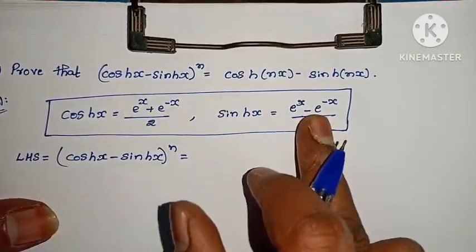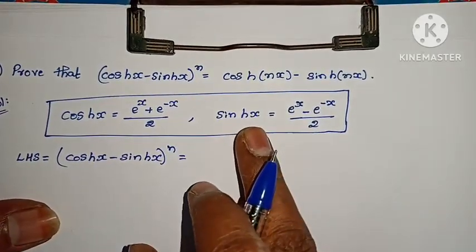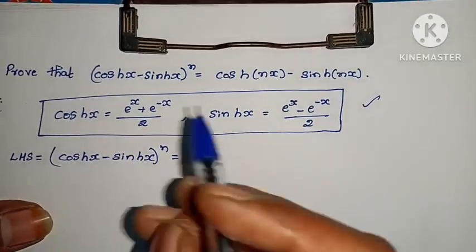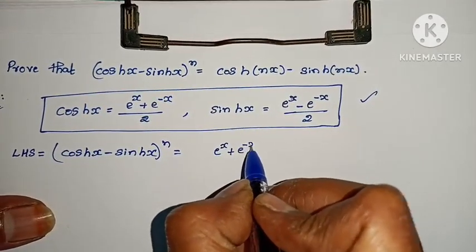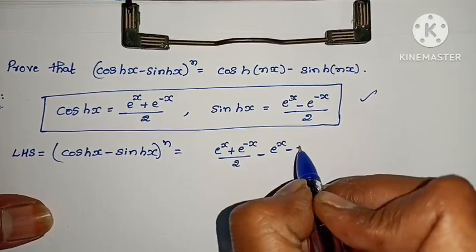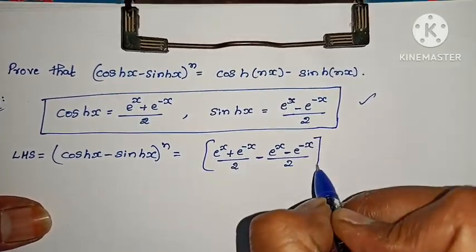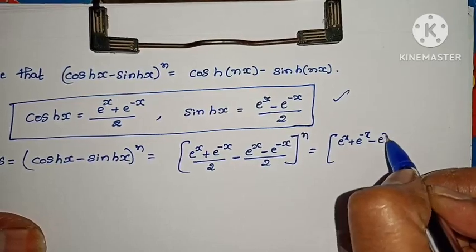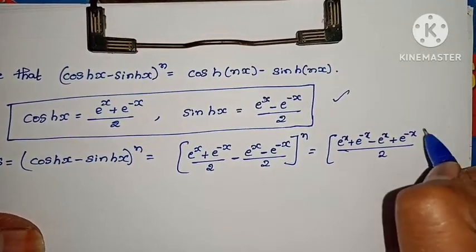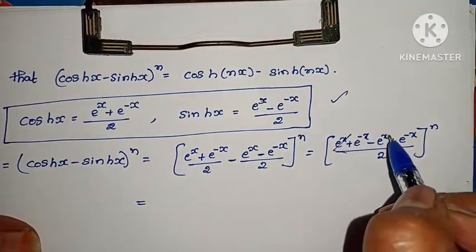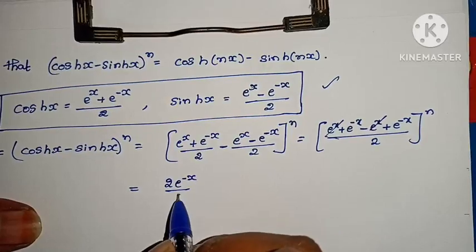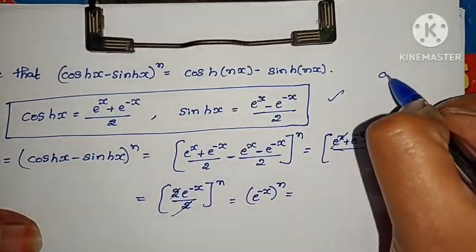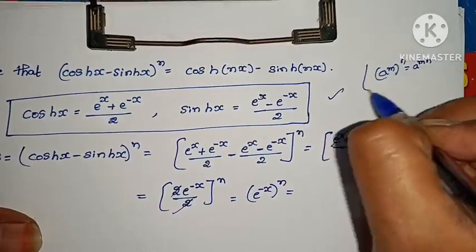LHS = (cosh(x) − sinh(x))ⁿ. Using the exponential definitions: cosh(x) = (eˣ + e⁻ˣ)/2 and sinh(x) = (eˣ − e⁻ˣ)/2. So cosh(x) − sinh(x) = (eˣ + e⁻ˣ)/2 − (eˣ − e⁻ˣ)/2. Taking LCM: (eˣ + e⁻ˣ − eˣ + e⁻ˣ)/2 = 2e⁻ˣ/2 = e⁻ˣ.